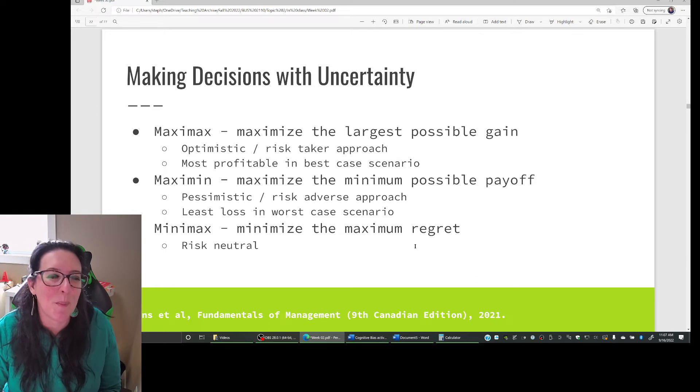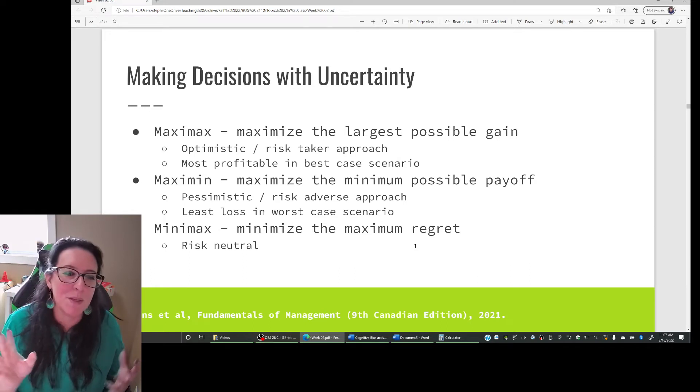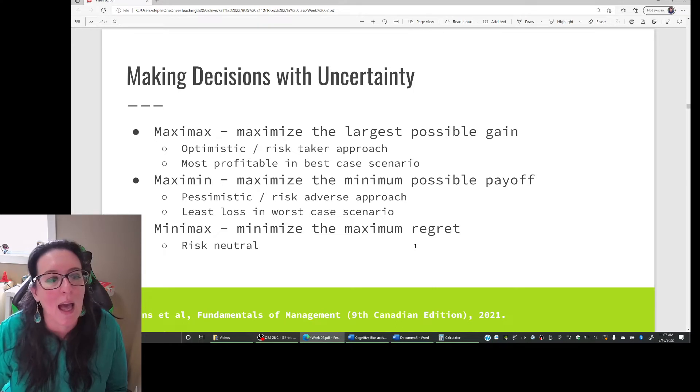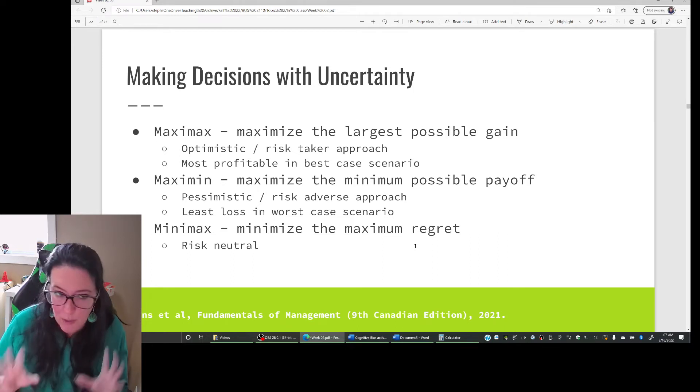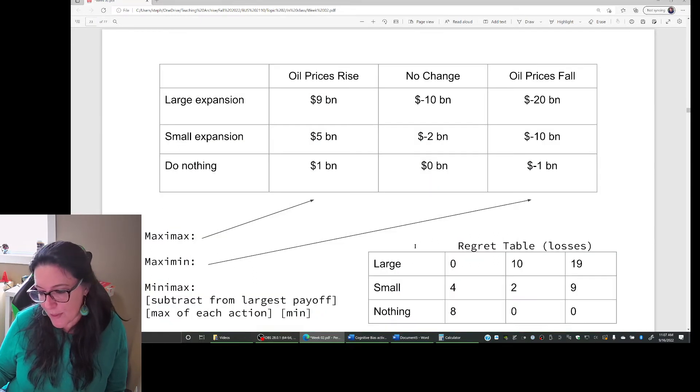There's also what is called MiniMax. This is risk-neutral. It doesn't assume optimistic or pessimistic. And it's about limiting the amount of regret that you have from the decision you made. So when you're thinking back in terms of, oh, we should have done something instead, we want to minimize that regret. So let's look at a scenario to help us understand.